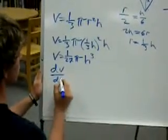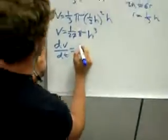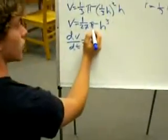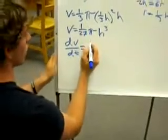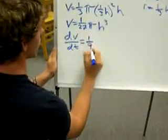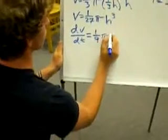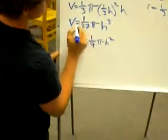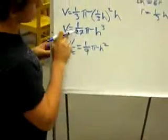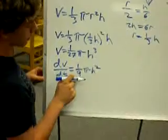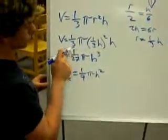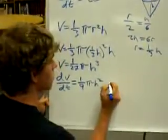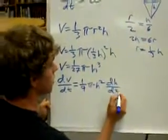So dV/dt is equal to 3 times one-twenty-seventh pi becomes one-ninth pi h squared, because if we are multiplying this by 3, 3 is essentially 3 over 1, 3 goes into 3 once, 3 goes into 27 nine times, so it becomes one-ninth pi h squared times dH/dt.